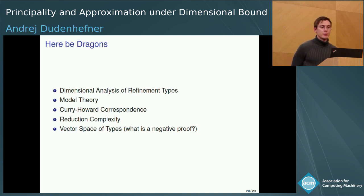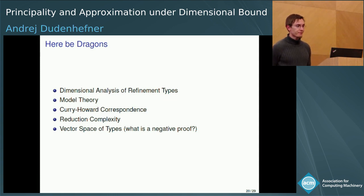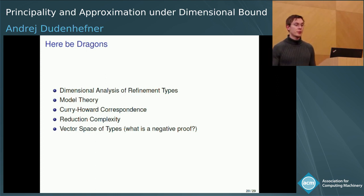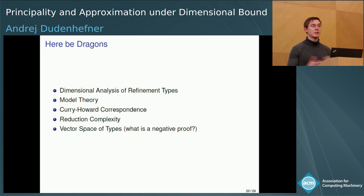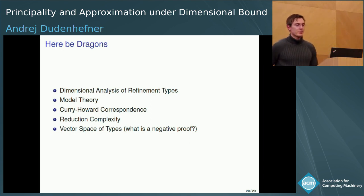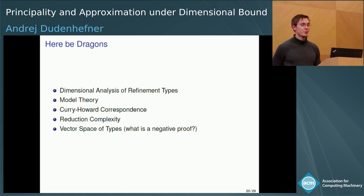There are clearly some open questions: model theory for the dimensional fragments, query-out correspondence. Maybe most interestingly, we are in a semi-module — can we go into a full-fledged vector space? Maybe there is some notion of negative proofs; maybe we can subtract proofs from one another. There is a lot of research still to do. I hope you got some nice insights from what I had. Thank you.